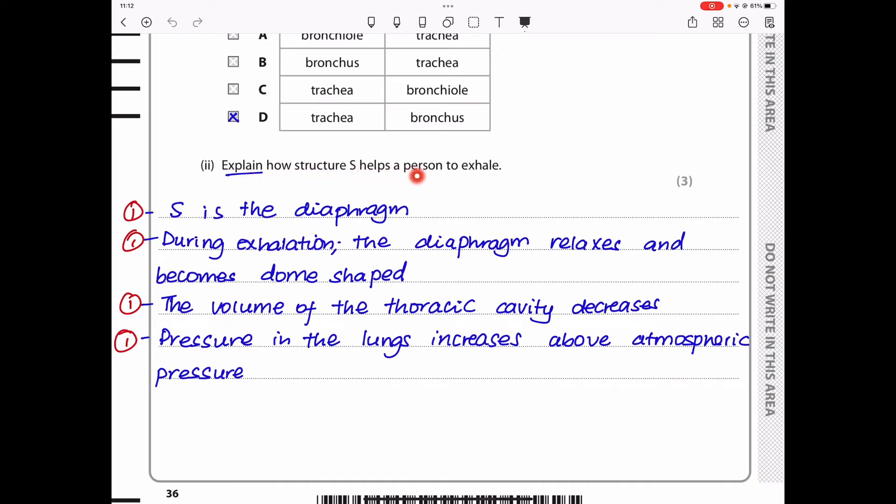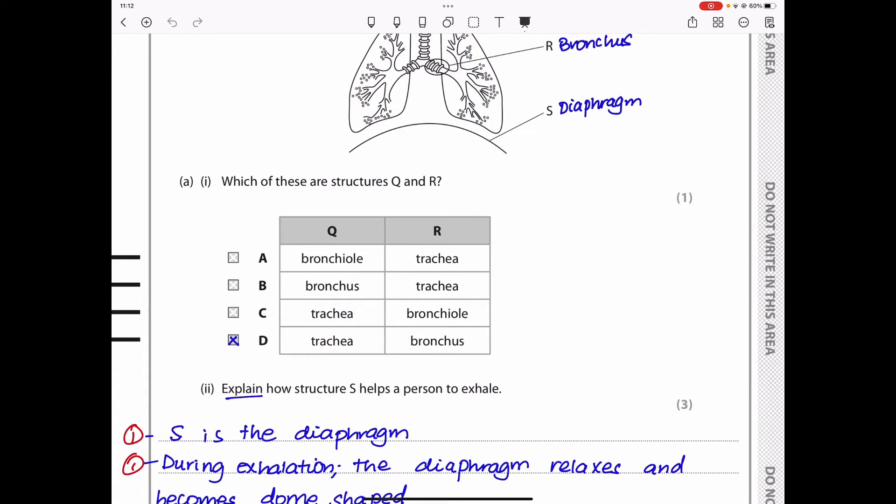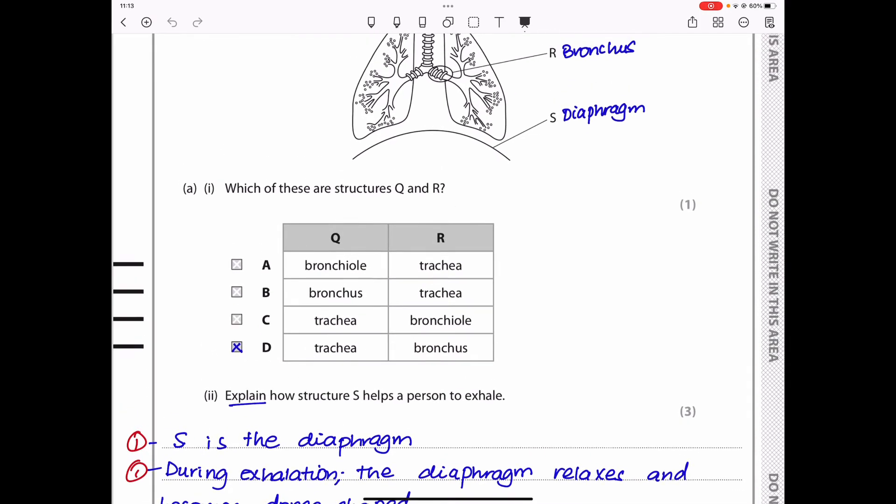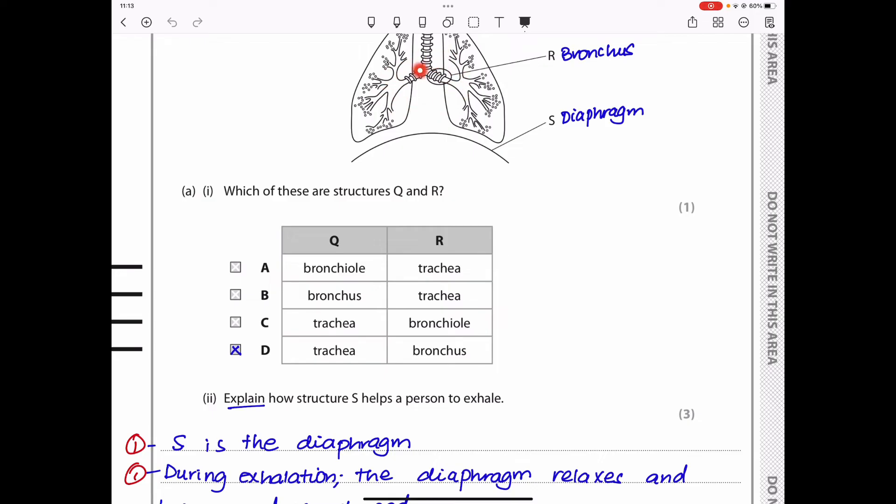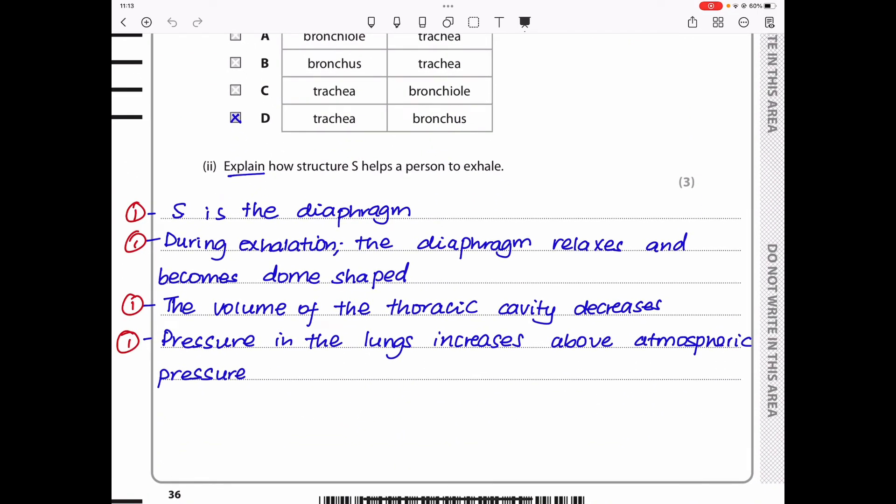Explain how structure S helps a person to exhale. Because the exam question has not labeled what structure S is, you have to begin by writing what S is. S is the diaphragm. If exhalation is to occur, this diaphragm has to become dome-shaped. It has to relax and become dome-shaped. When that occurs, the volume inside the thoracic cavity is going to decrease, leading to an increase in pressure above atmospheric pressure. So the air is going to be pushed out. During exhalation, the diaphragm relaxes and becomes dome-shaped. The volume of the thoracic cavity decreases, and the pressure in the lungs increases above atmospheric pressure, and that will lead to air being pushed out.